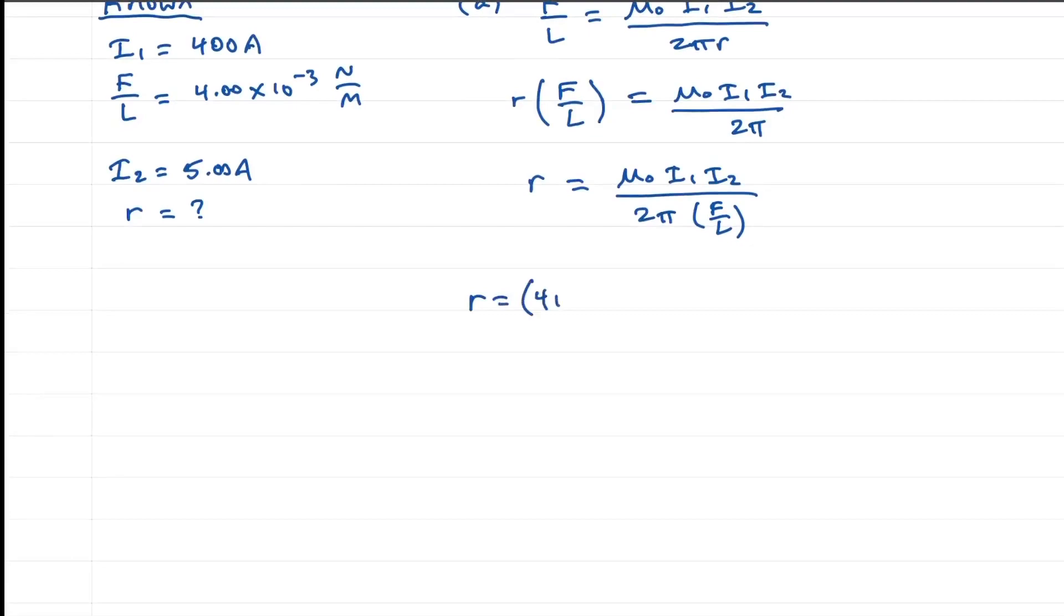Mu 0 is 4 pi times 10 to the minus 7 tesla meters per amp. Current 1 is 400 amps. Current 2 is 5 amps. And divide that by 2 pi. And then the force per length is 4 times 10 to the minus 3 newtons per meter.